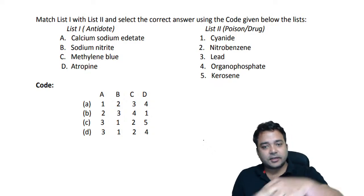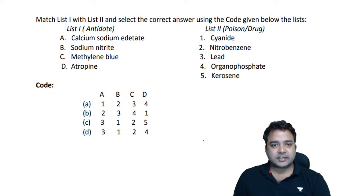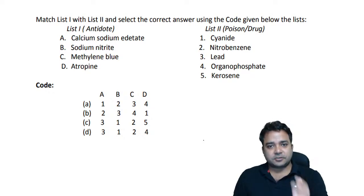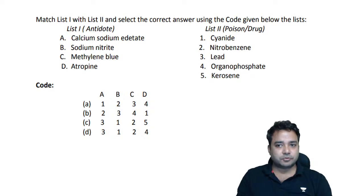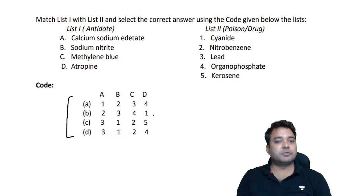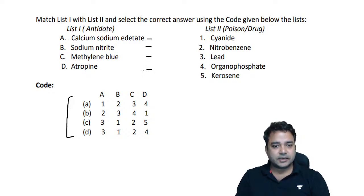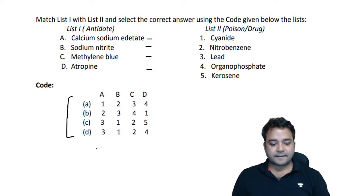Another year they asked another question from antidotes. Match list one with list two and select the correct answer using the code given below. You have to put your answer out of A, B, C, D — but first form the sequence matching alphabets to numbers, then put in your answers.